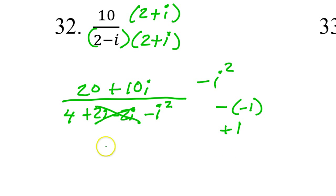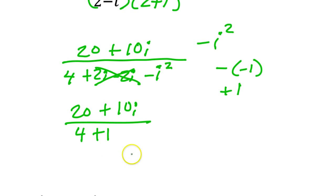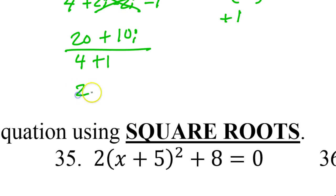So the positive 2i and the negative 2i, they cancel each other out. So I'm going to wind up with 4 plus 1 in the denominator. So 5. I'm going to wind up with 5. So I've got 20 plus 10i. Okay? So I have 20 plus 10i over 5.